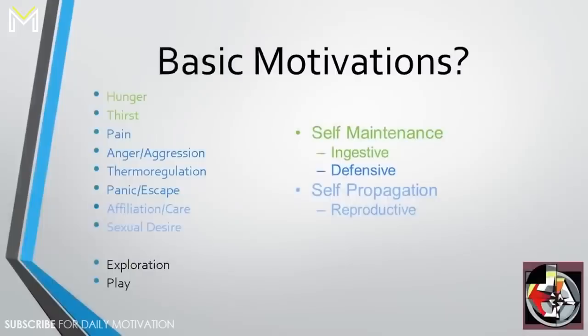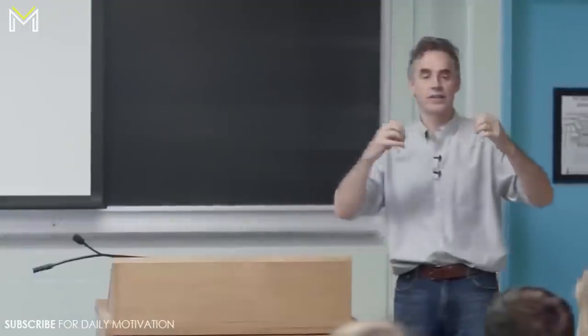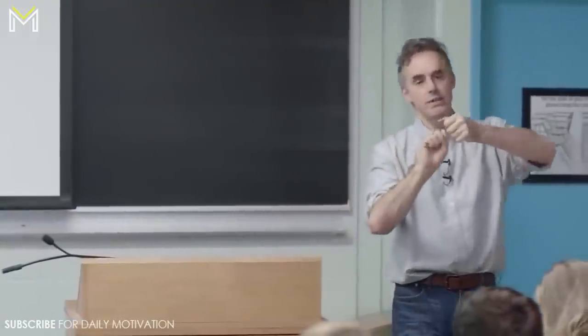So basic motivations: hunger, thirst, pain — pain is not regulated by the hypothalamus, that's a different circuit — anger/aggression, thermal regulation, panic and escape, affiliation and care, sexual desire, exploration, and play. You can kind of break those into the classic Darwinian categories too.